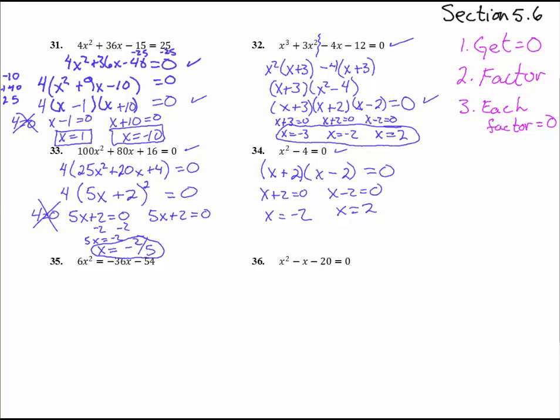Alright. Number 35. Oh, this guy we've got to work on a little bit. Step number 1. Get it equal to 0. We've got to add 36x to both sides. So we've got to add 36x. And we've got to add 54. So plus 36x plus 54 equals 0. Okay, so that was important. Now we have it equal to 0. So the factoring will do us any good at all.